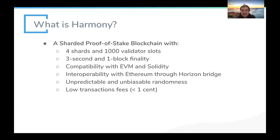We have the Horizon bridge which provides interoperability with the Ethereum blockchain, so you can move assets back and forth from Ethereum to Harmony within seconds. Harmony also has an unpredictable and unbiasable randomness generation protocol that produces reliable and secure random numbers, used both for applications and for the random resharding of the network. Our network is scalable and efficient, supporting very low transaction fees — transactions cost close to nothing.